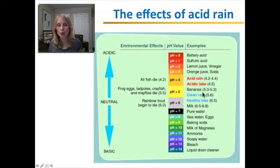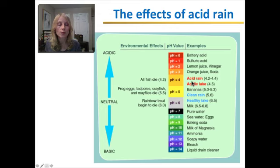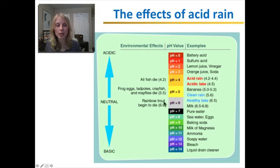Now let's look at the consequences of acid rain. Neutral water has a pH of 7. Clean rain, even when not considered acid rain, is already slightly acidic at 5.6, and a healthy lake is pH 6.5. With acid rain, the rain becomes around pH 4, and lakes can also be around 4 or 4.5. Trout begin to die at pH 6; frogs, eggs, crayfish, and mayflies die around 5.5; and at pH 4.2, all fish and other aquatic organisms will die.